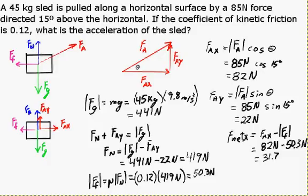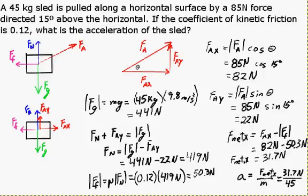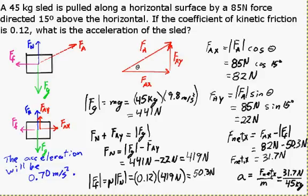We have a net force of 31.7 Newtons. The acceleration is simply the net force divided by the mass. The net force is going to be horizontal. So the acceleration will be 31.7 Newtons divided by 45 kilograms, or 0.70 meters per second squared.